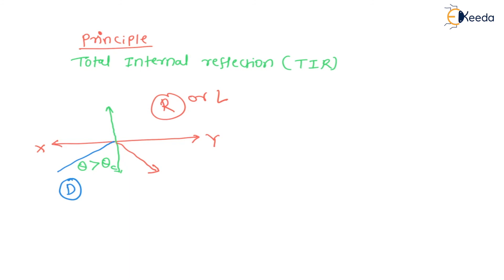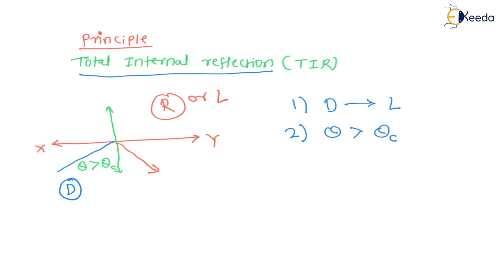Remember two important things required for total internal reflection. The first is that light must travel from a denser medium to a lighter medium. The second is that the angle of incidence must be greater than the critical angle. Also remember that every medium has its own critical angle — it is an individual property of the medium. In the next session, we will see the basic construction of optical fiber and how total internal reflection is used in it. Thank you.